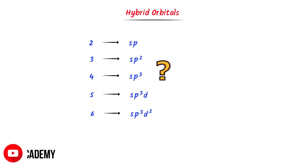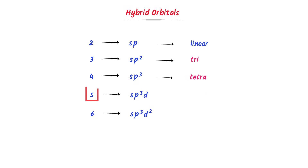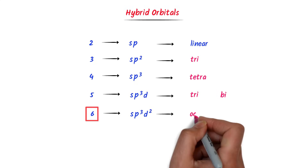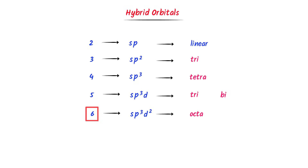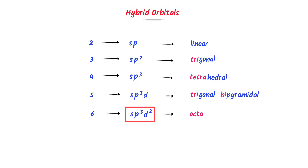Now what about their geometry or shapes? When the hybridization is sp, the geometry is linear. When it is sp², the geometry is trigonal. When it is sp³, the geometry is tetrahedral. When it is sp³d, the geometry is trigonal bipyramidal. When it is sp³d², the geometry is octahedral. Note: 3 means trigonal, 4 means tetrahedral, 5 means trigonal bipyramidal (tri=3, bi=2), and 6 means octahedral. Note down this important list.